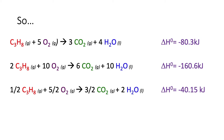You could also go the other direction: if you use half a mole of propane combined with two and a half moles of oxygen, that will produce one and a half moles of carbon dioxide and two moles of water, and the standard enthalpy will be minus 40.15 kilojoules—half of what we started with.